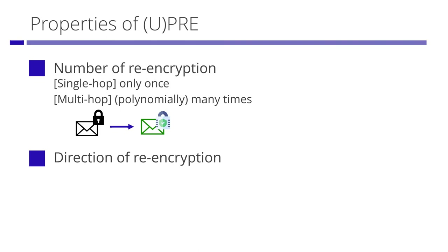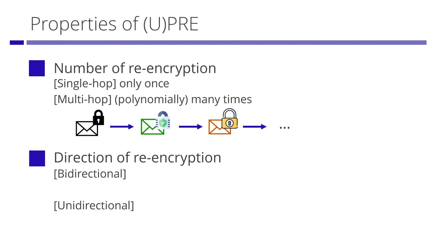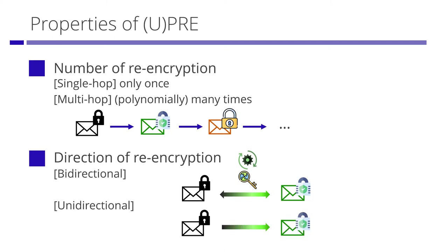There are two important notions in PRE and UPRE. One is the number of re-encryptions. If a re-encrypted ciphertext cannot be re-encrypted anymore, we call it single-hop. If we can re-encrypt a re-encrypted ciphertext again and again, we call it multi-hop. The other notion is the direction of re-encryption. If a re-encryption key can convert a delegator's ciphertext into a delegatee's ciphertext and vice versa, we call it bidirectional. If a re-encryption key can convert in one-way direction, we call it unidirectional.